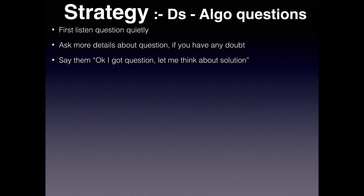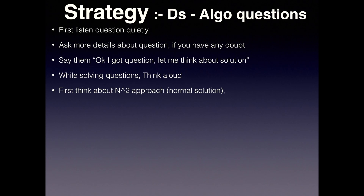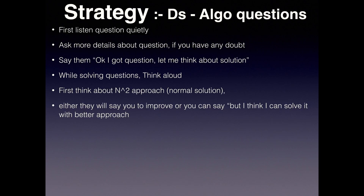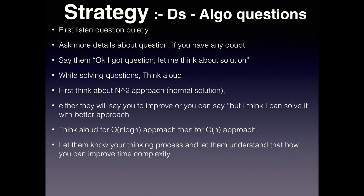They also want you to think before speaking anything. While solving the question, think aloud. First think about the O(n²) approach — the normal solution. Either they will ask you to improve it, or you can say 'I think I can solve it with a better approach.' Think aloud for each approach, one at a time. This will show what your thinking process is and how you approach and improve the time complexity.